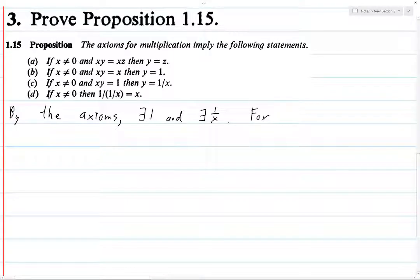Okay, so for part a, xy equals xz. Well, what we can do is if these two things are equal, then multiplying on the left by 1 over x has no effect. You know what, I'm going to write this as x inverse xy equals x inverse xz. And x inverse times x equals 1. So this is 1 times y equals 1 times z. And so y equals z.